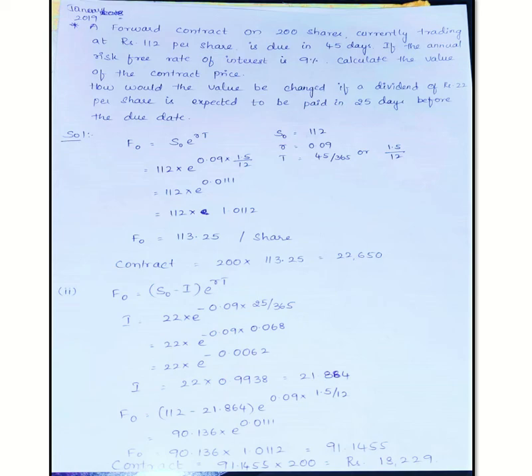For that, it's known income case, so F₀ = (S₀ - I) × e^(rt), where the due date is 20 days. Now I, the income, is Rs. 22, expected to be paid 20 days before the due date. So 20 days before the due date means we need to discount it back.